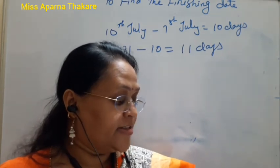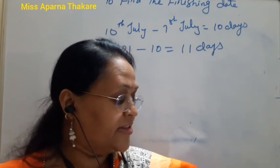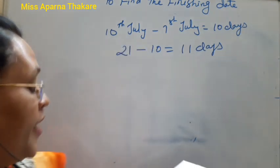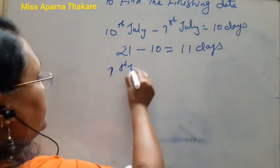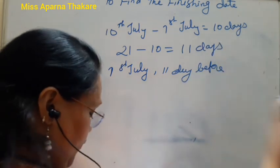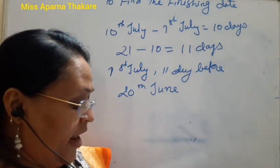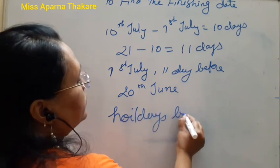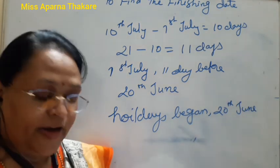To verify by counting forward: 20th June to 30th June is 11 days, and 1st July to 10th July is 10 days — total 21 days. So Rijul began his holiday on 20th June. That is 11 days before 1st July, which is 20th June, giving a total of 21 days.